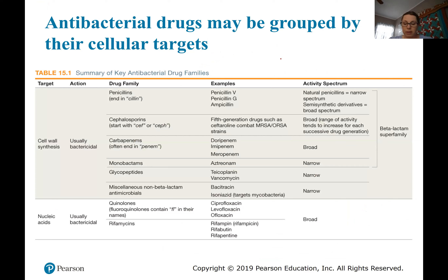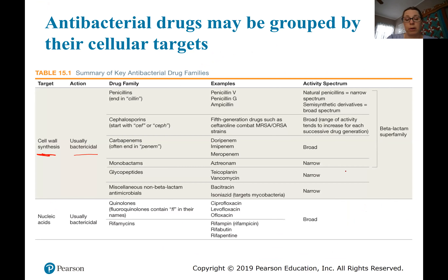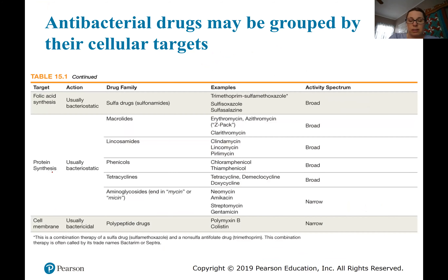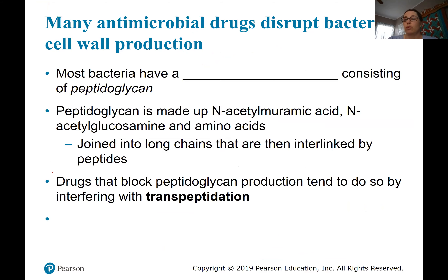The next couple of slides are good summary slides — they cover whether drugs are bactericidal or bacteriostatic, their target (such as the cell wall), and whether they're narrow or broad spectrum. We're not going to talk about each different drug type; we'll just pick out a few in the interest of time. Let's start with the first mode of action: cell wall production — drugs that target the cell wall of bacteria.